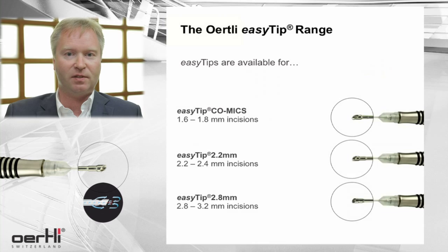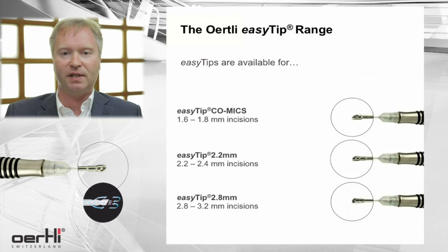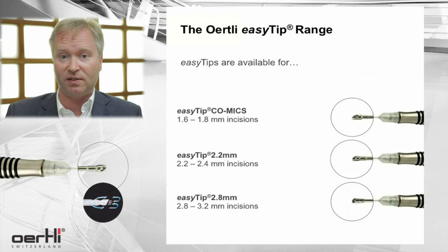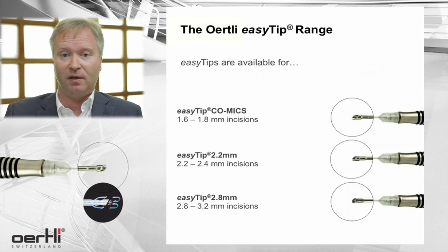The Comix tip is 1.6 to 1.8 mm. The EasyFACO 2.2 tip ranges between 2.2 and 2.4 mm. And there is the Accelerator Easy Tip at 2.8 mm. So all these incision sizes are available.